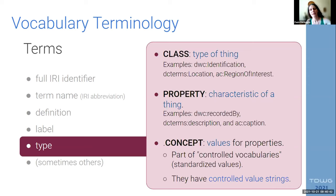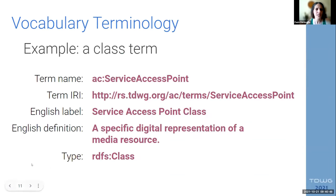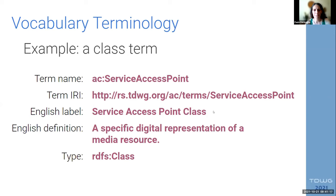Terms can also have other characteristics that are always present. An example of a class term is AC service access point — it has an IRI, which is the unique identifier that never changes, an English label that is perfectly human readable, a definition in English which is the normative definition, and its type which is 'class'.